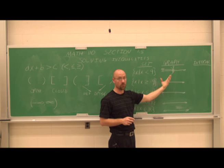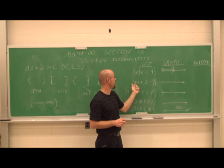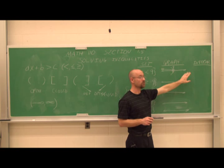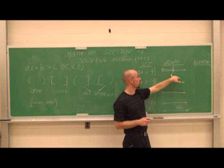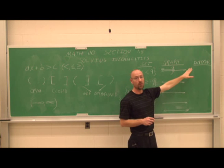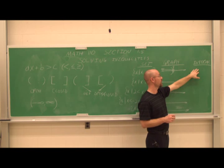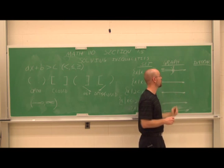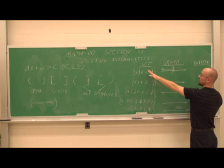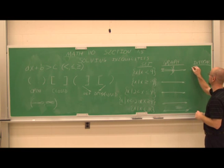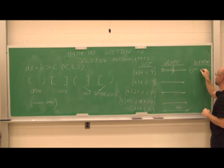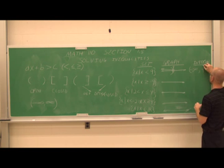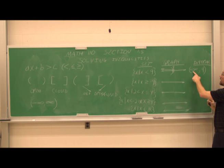Let's also express that answer in interval notation. I prefer using parentheses or brackets on the graph because it tells me what to use when writing interval notation. Interval notation is always written from least to greatest value, left to right. This arrow points to negative infinity, so I write negative infinity with a parenthesis up to the value of 9, with a parenthesis since it's not included. This is the open interval from negative infinity to 9.